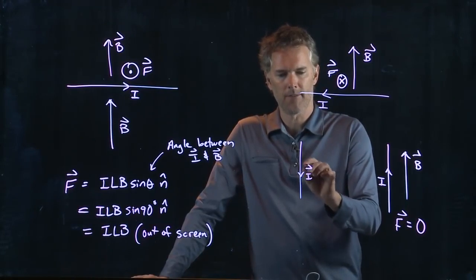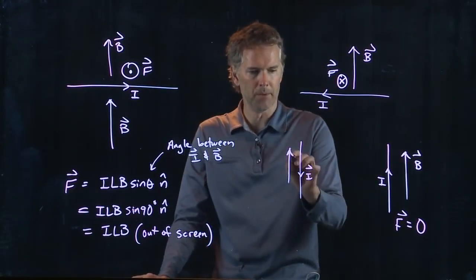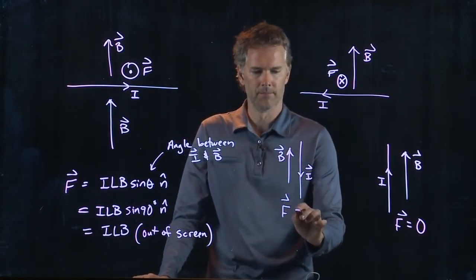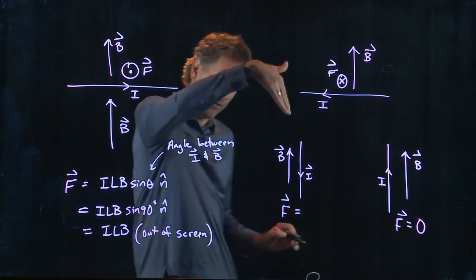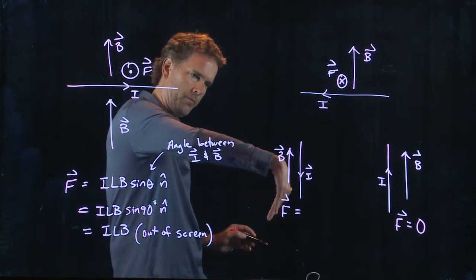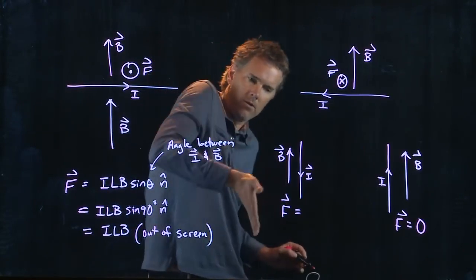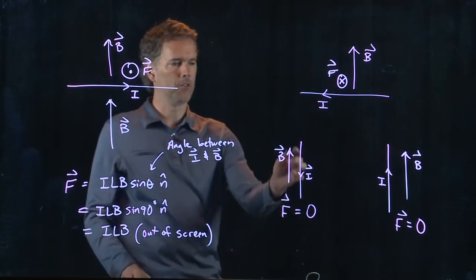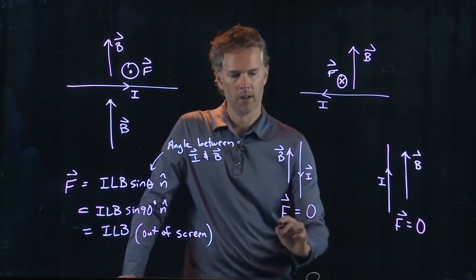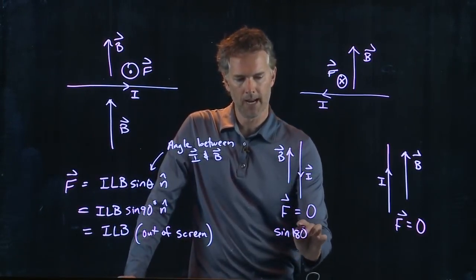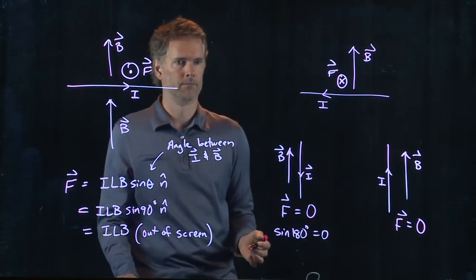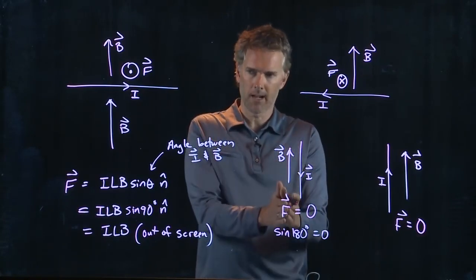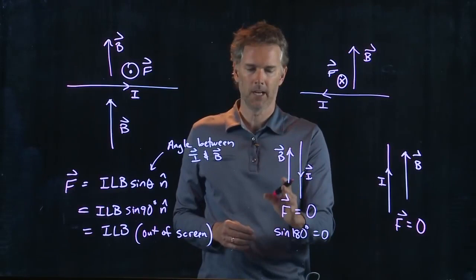What about this? Let's say I have I going down, but B is going up. What's the force there? Well, I put my fingers in the direction of I, and now I curl it into the direction of B. But I've got to come back all the way around. Should I go that way, or should I go this way? I don't know. So again, it's zero. And that's because this is 180 degrees. Sine of 180 degrees is equal to zero. So just like we had with QV, anytime the current is parallel or anti-parallel to the magnetic field, there's no force.